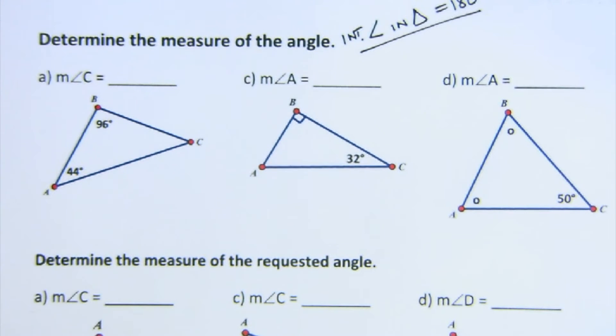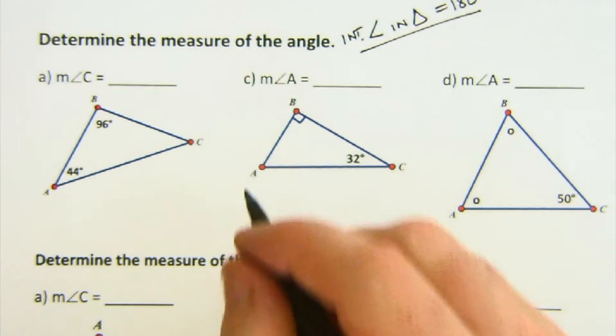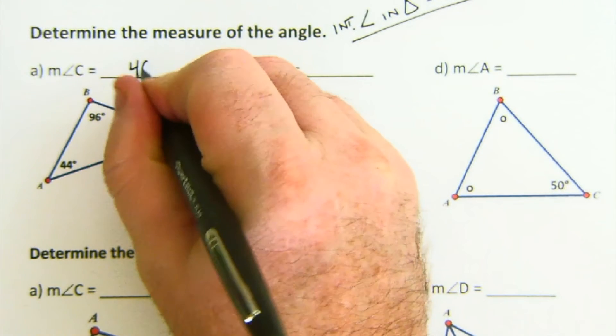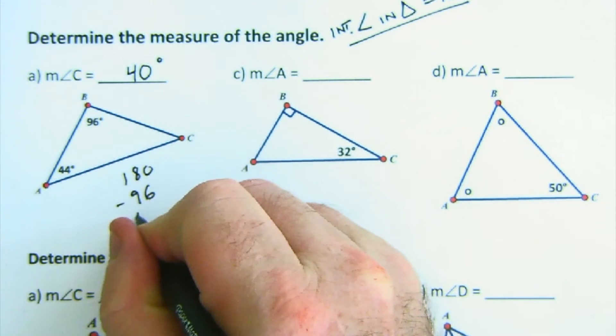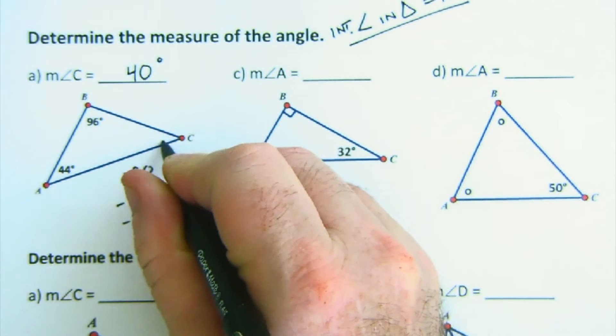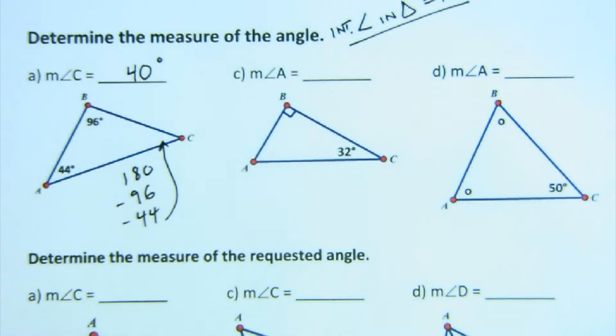So in the first case, we just have two angles, and we would just take those two angles of 96 and of 44 and subtract them to obtain 40 degrees. So I just took 180, I took away the 96, took away the 44, and what's left has to be our value of C, which would be 40.